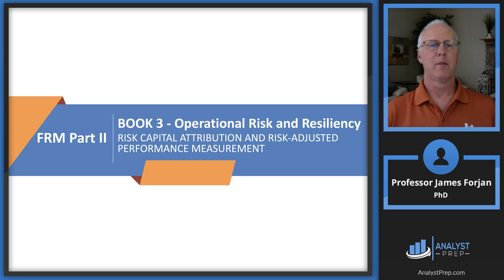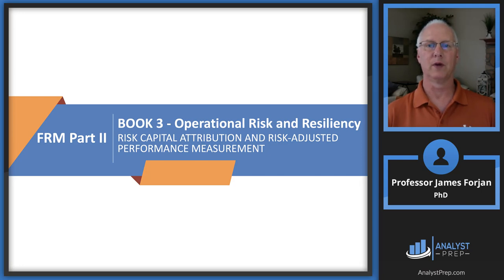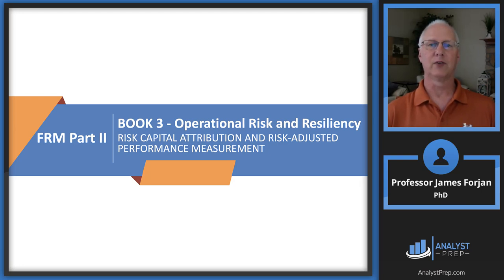This is FRM Part 2, Book 3, Operational Risk and Resiliency, and the chapter on Risk Capital Attribution and Risk Adjusted Performance Measurement. Notice the first two words in the chapter title: Risk Capital.